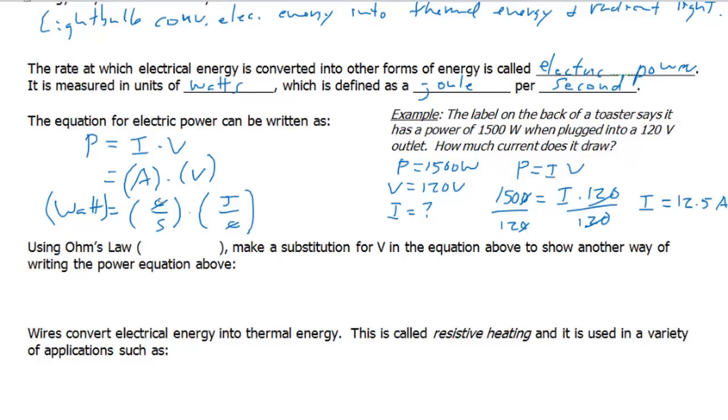There's another way of writing this equation for power. We're going to do a substitution using Ohm's Law. So for Ohm's Law, we can write down Ohm's Law as voltage equals current times resistance. And if we start with that equation that we have above, P equals IV, but then we substitute in for V, I times R. What we have now is I times I times R, which is I squared R. So this is another common way of writing this equation, and it's one that you will have to know how to use.